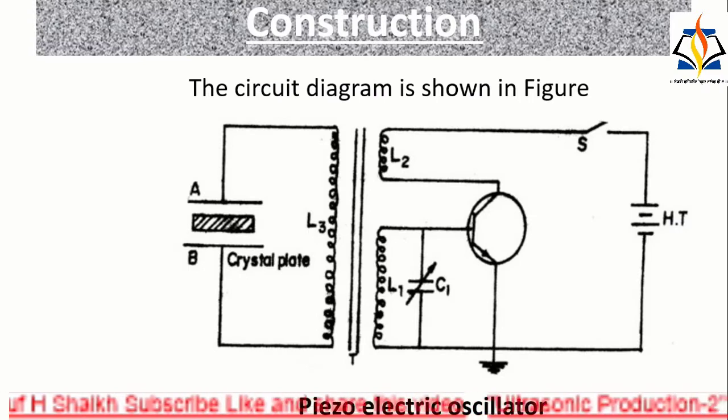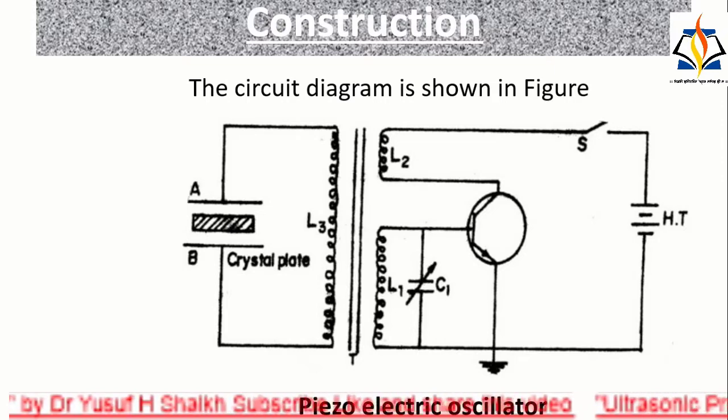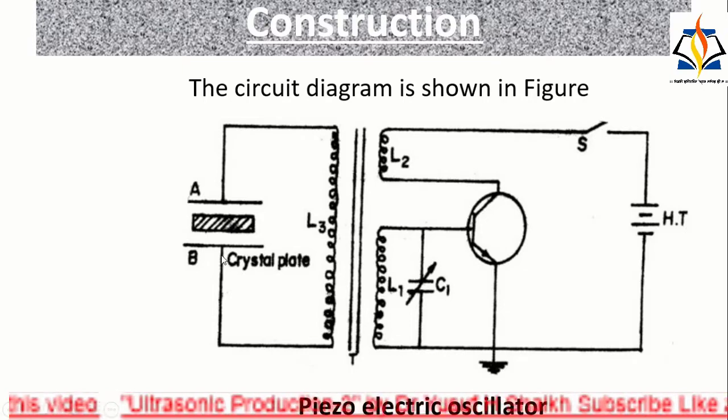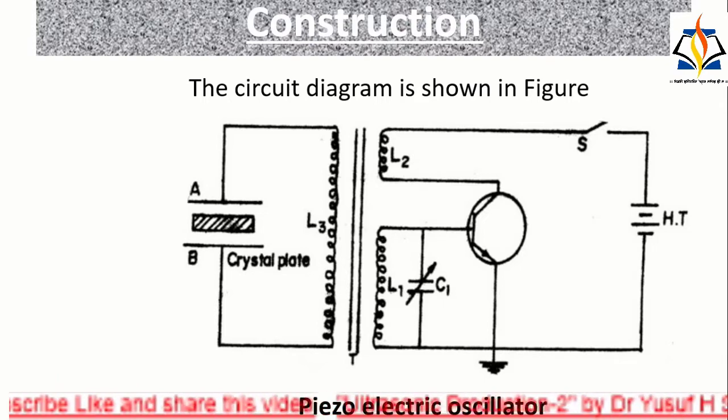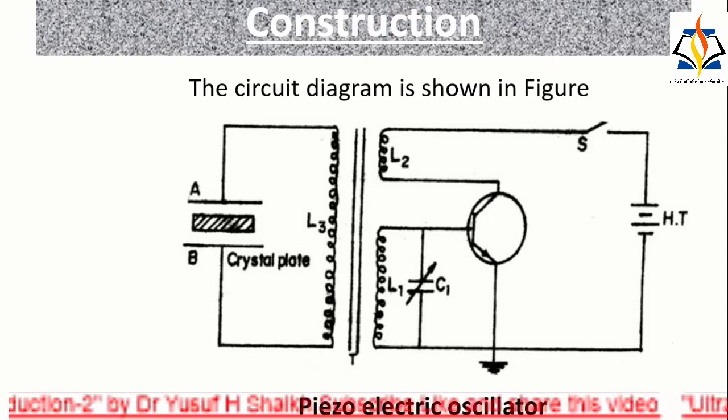Construction of the piezoelectric oscillator. The quartz crystal is placed between the two metal plates A and B. The plates are connected to the primary L3 of a transformer which is inductively coupled to the electronics oscillator. The electronic oscillator circuit is a base tuned oscillator circuit.